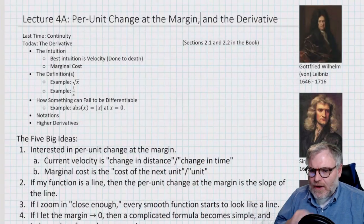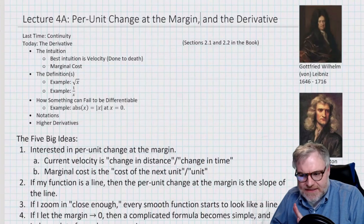We're going to look at a slightly different intuition. You did velocity in peer leading — you can think of velocity as the per unit change at the margin, the marginal change divided by the distance or whatever unit you had, the marginal change of distance. Now what we want to look at is a slightly different example: marginal cost, an economics example.